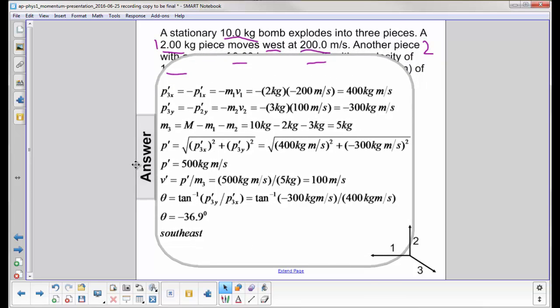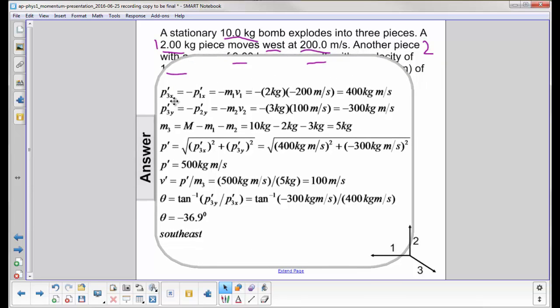So here's the math. P3 prime x, that's this guy's velocity in the x direction, has to be equal and opposite to p prime 1x, so you get zero momentum in the x direction. So that's going to be minus m1 v1.